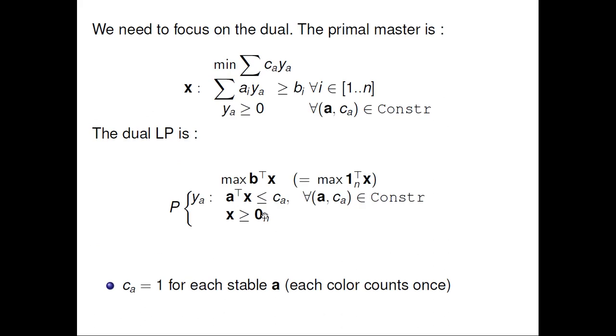For this, we will focus on the dual model in graph coloring, the column generation. The primal master is written this way. This means that given any stable of the graph a, we have the variable y_a, which indicates how many times the stable is chosen. And we ask, with this constraint, that for whatever vertex i we need, that the number of times the vertex is covered is greater than or equal to b_i.